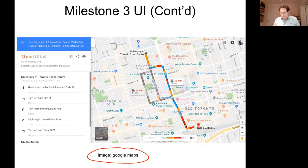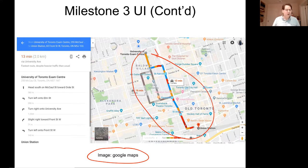In addition to giving text directions, we also want you to draw the path — show us the directions and make sure the visual and text together make it very clear how to get somewhere.